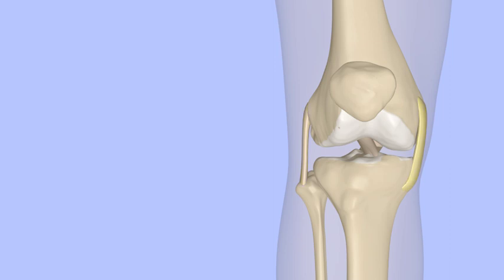They help to keep the knee from bending to the side. The medial collateral ligament, or MCL, is found on the medial, or inside, of the knee. It keeps the knee from bending too far outward.